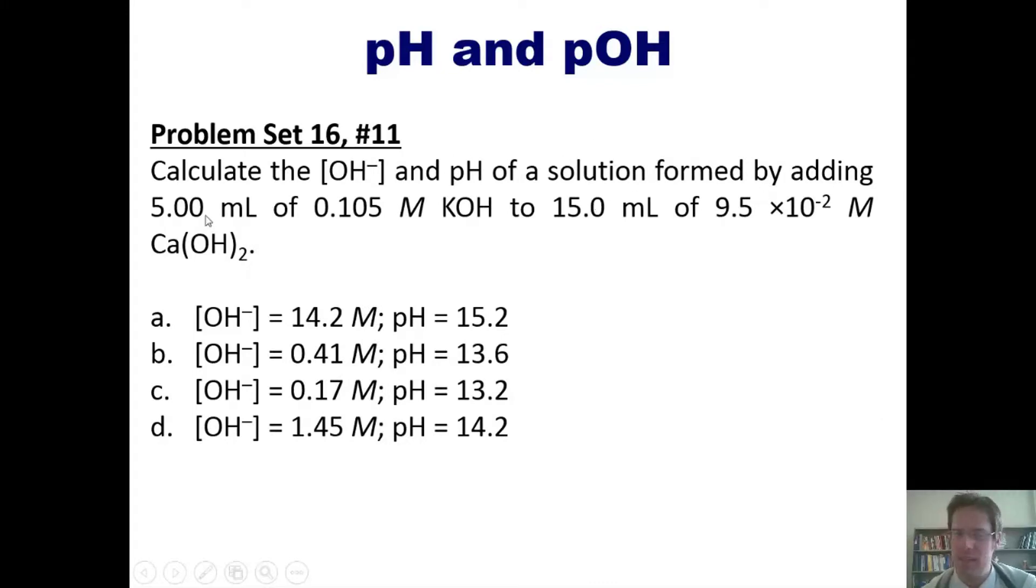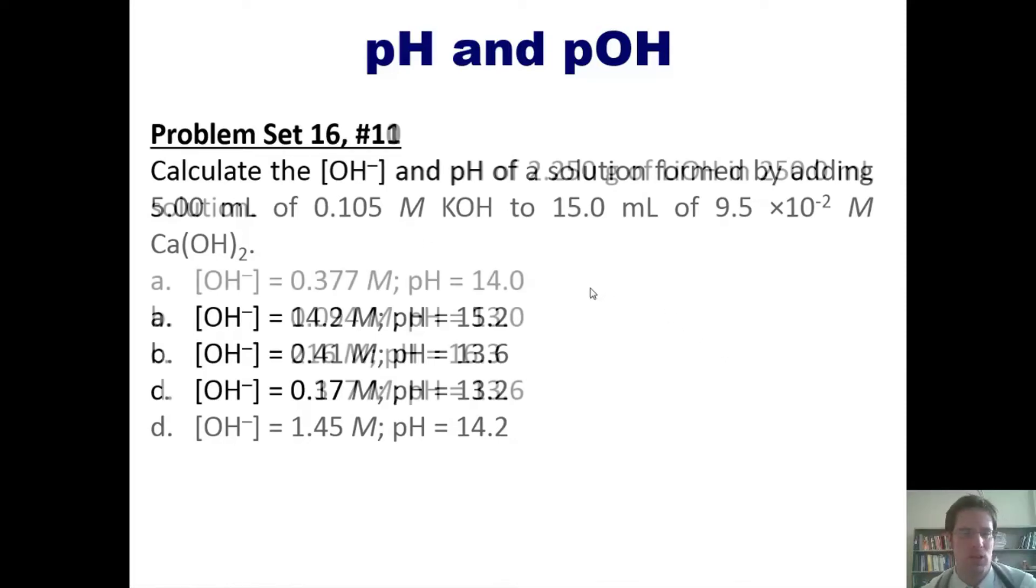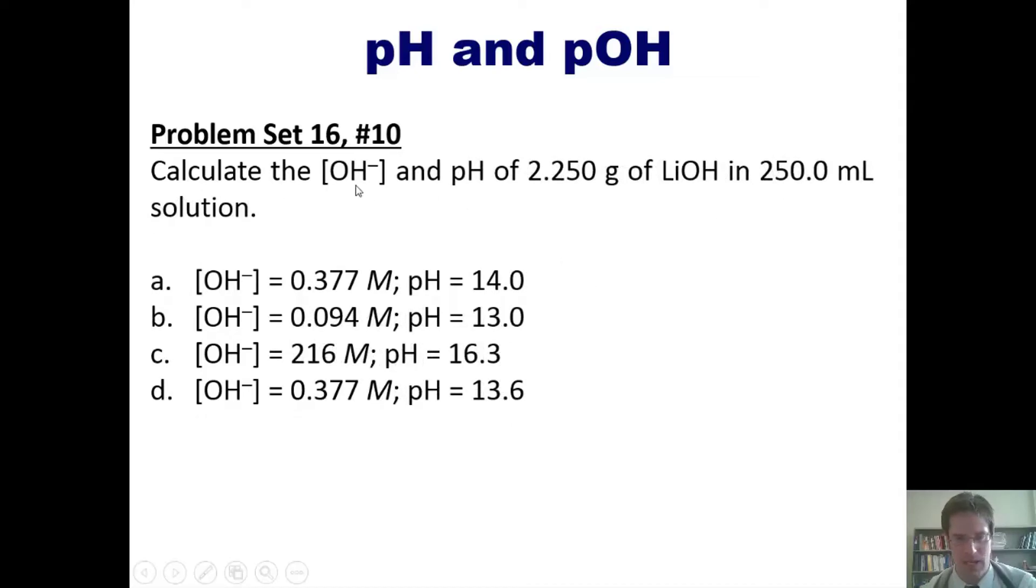And now another: calculate the hydroxide ion concentration and pH of a solution formed by adding 5 milliliters of this concentration of KOH to 15 milliliters of this concentration of calcium hydroxide. Once again, I invite you to try this on your own, then if you want, you can click this link which will take you to a separate video where I answer it for you on the board.